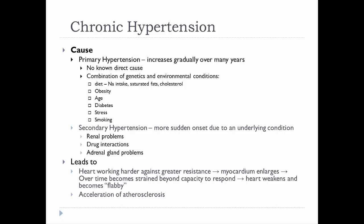There's no direct underlying cause for primary hypertension. It can be a combination of things: genetics, environment, diet, obesity, age, diabetes, stress, and smoking — all of those could contribute to and cause hypertension.